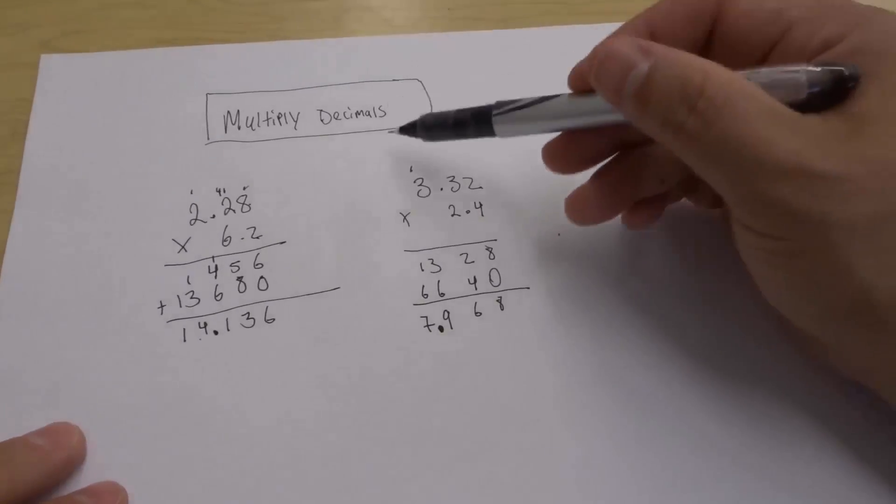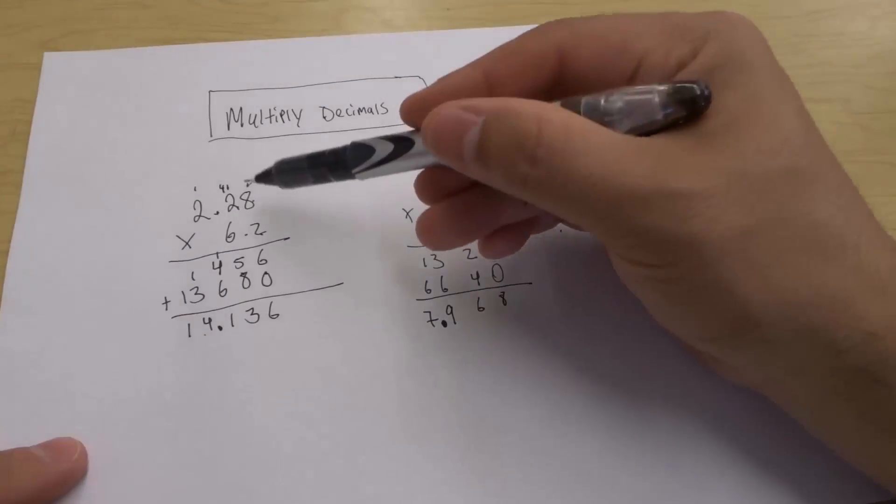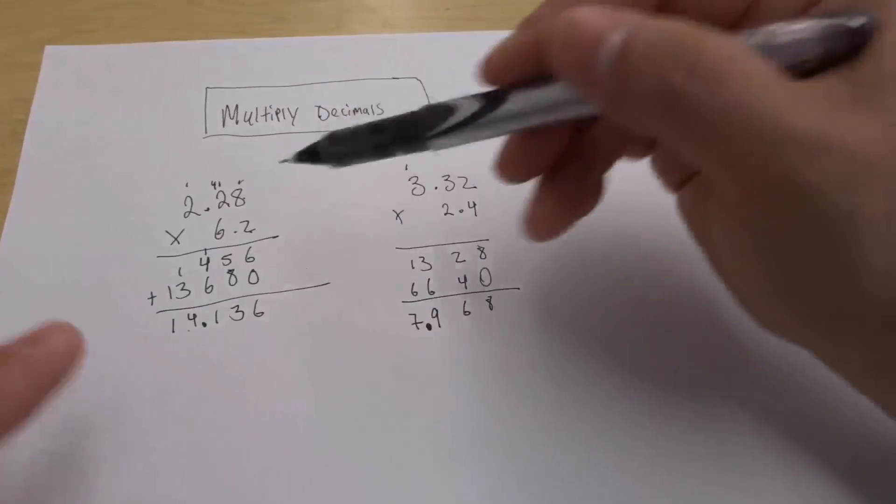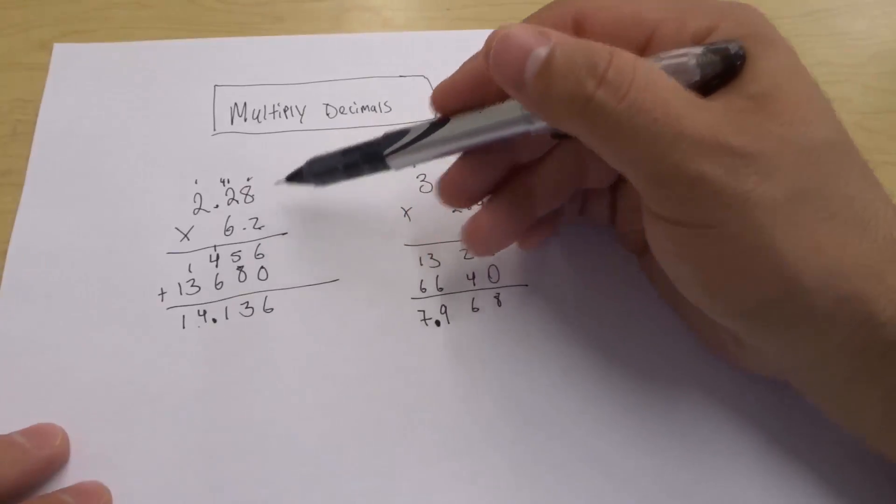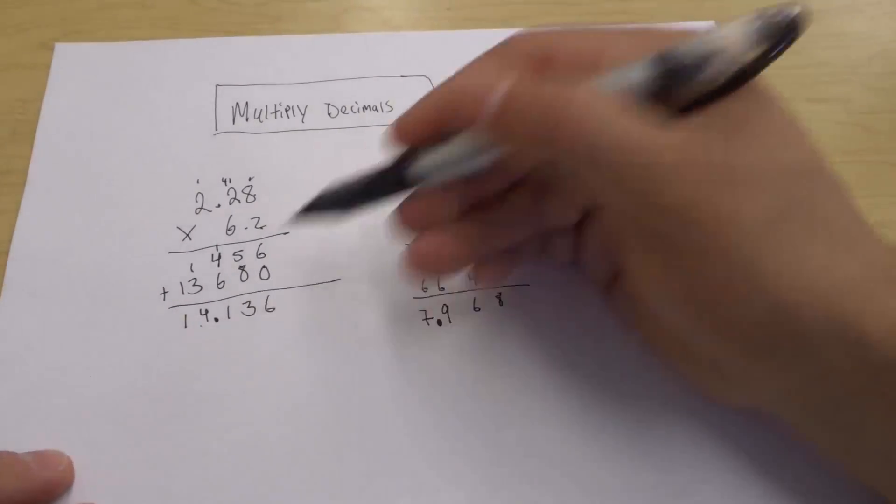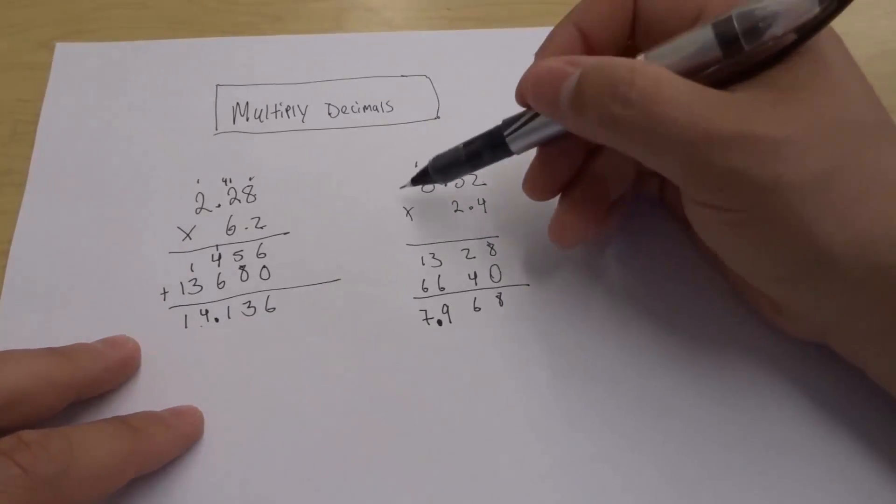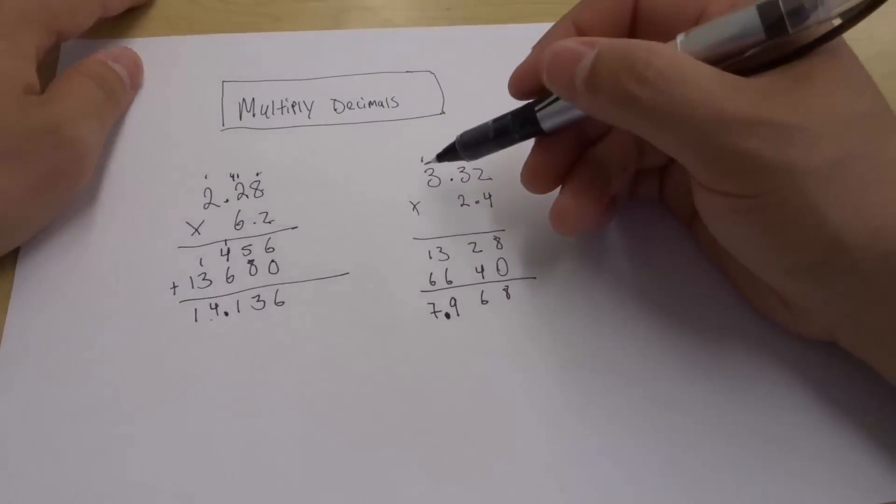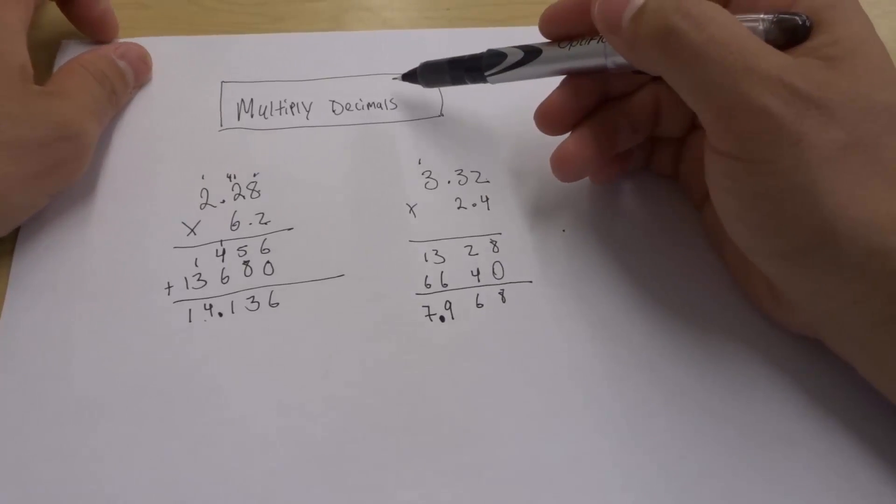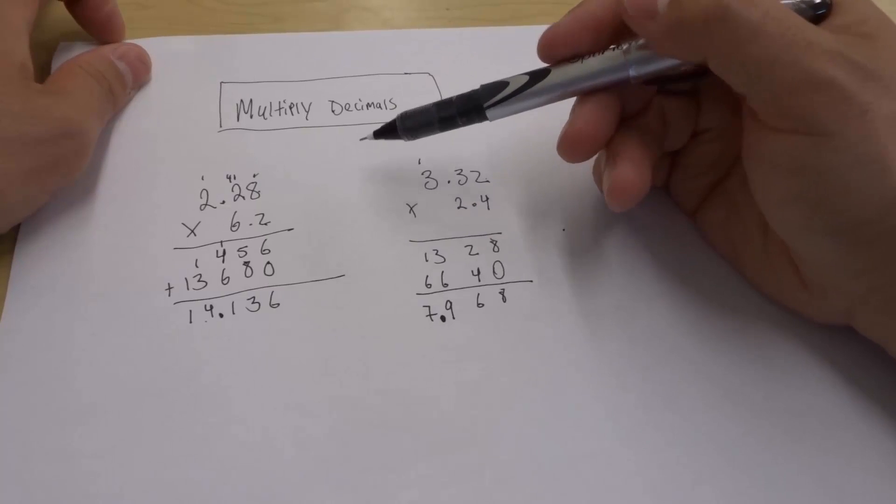That's basically it. That is how to multiply decimals. It's a very simple process. The key factor is that you want to multiply the numbers as if there aren't any decimals, just do regular multiplication. Then you want to add the decimal in at the end. It makes it so easy to multiply these decimal numbers. I've outlined the entire process in this video tutorial. Follow these steps and you should be able to multiply decimals easily.